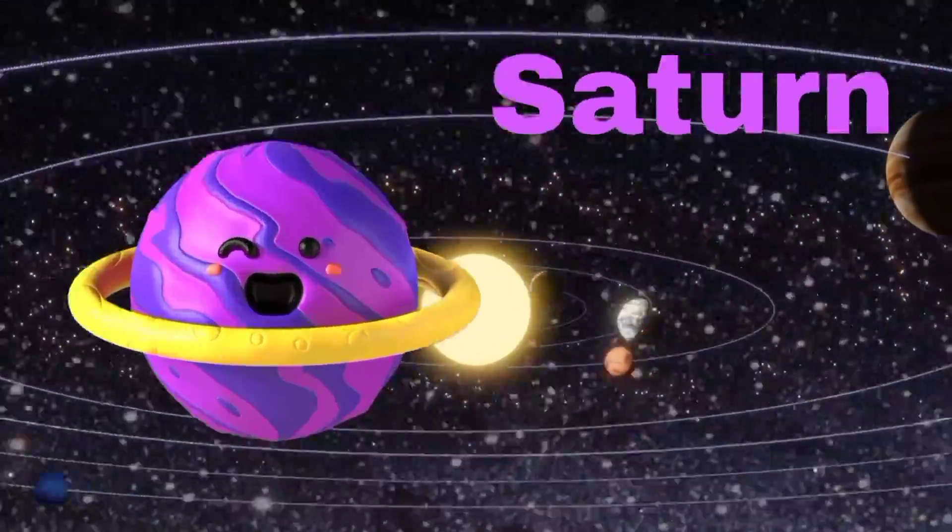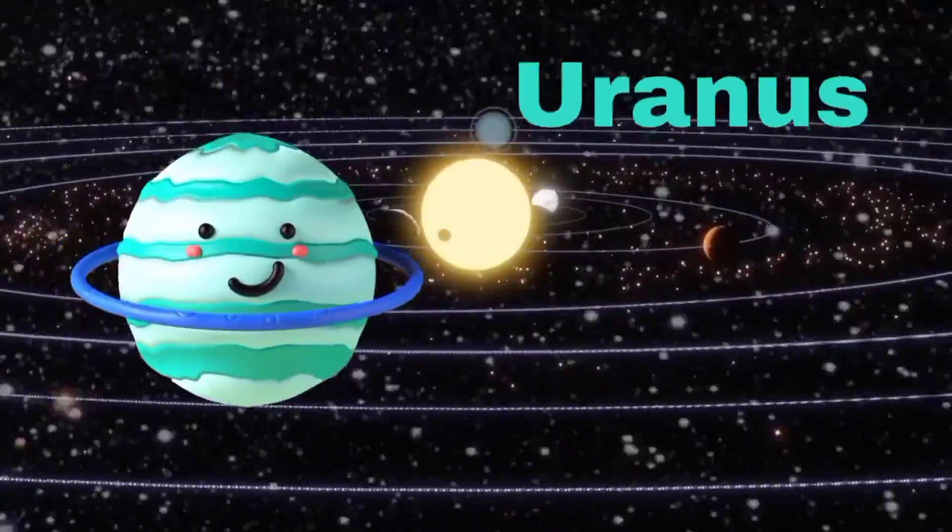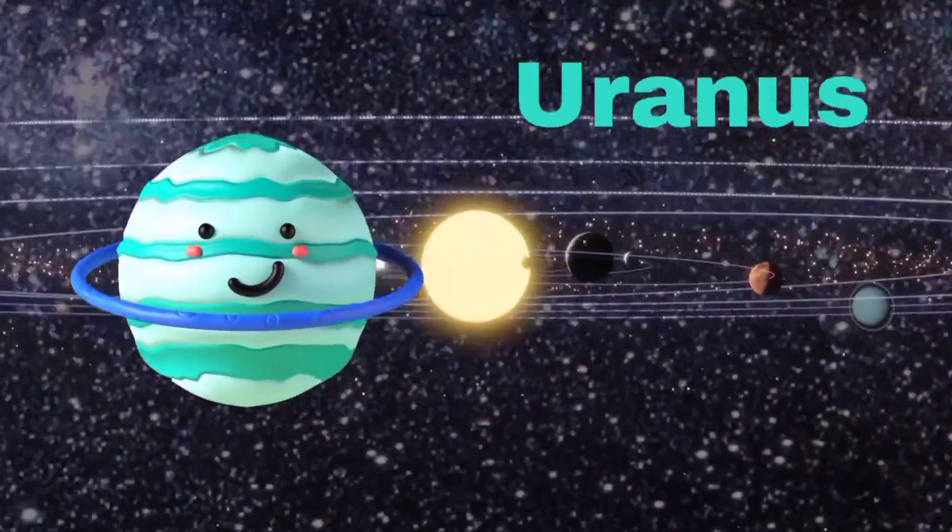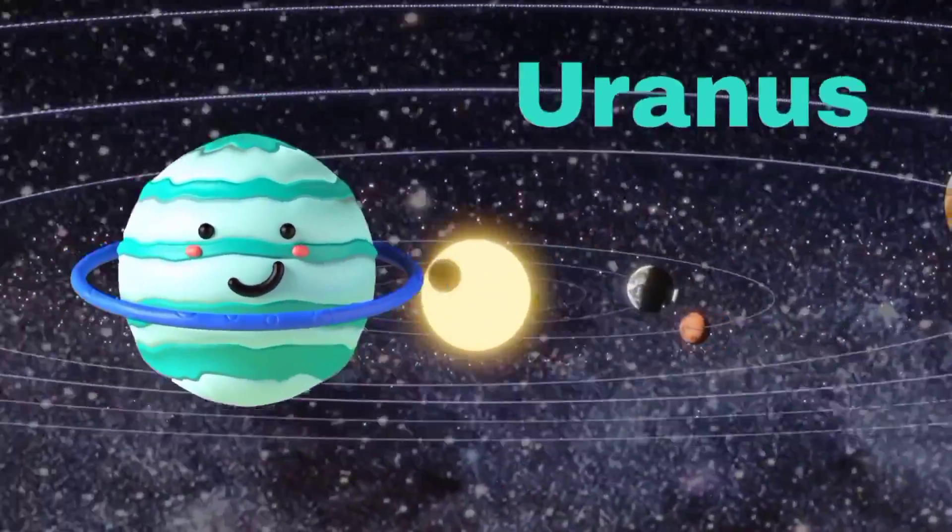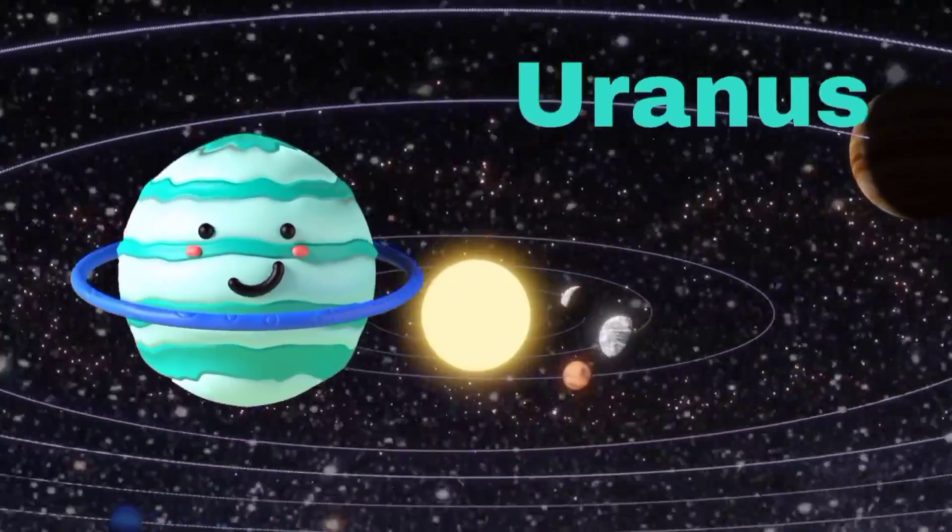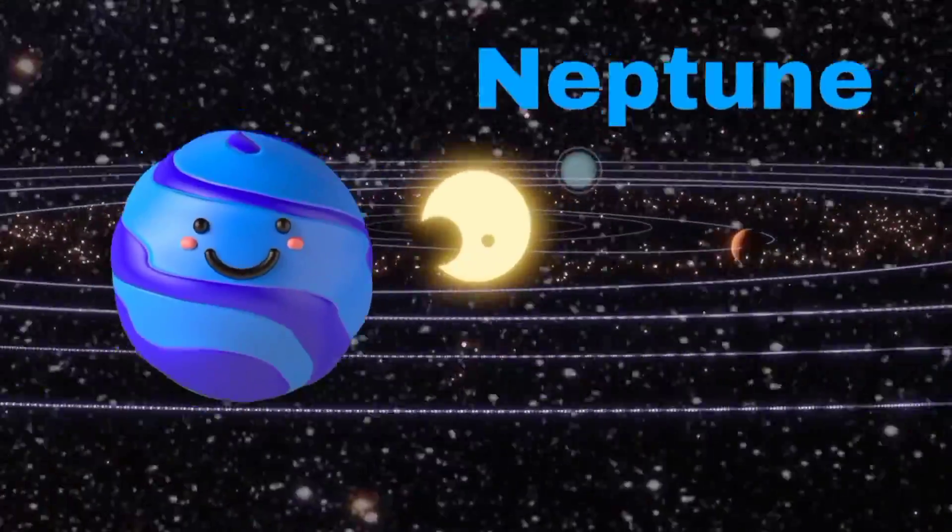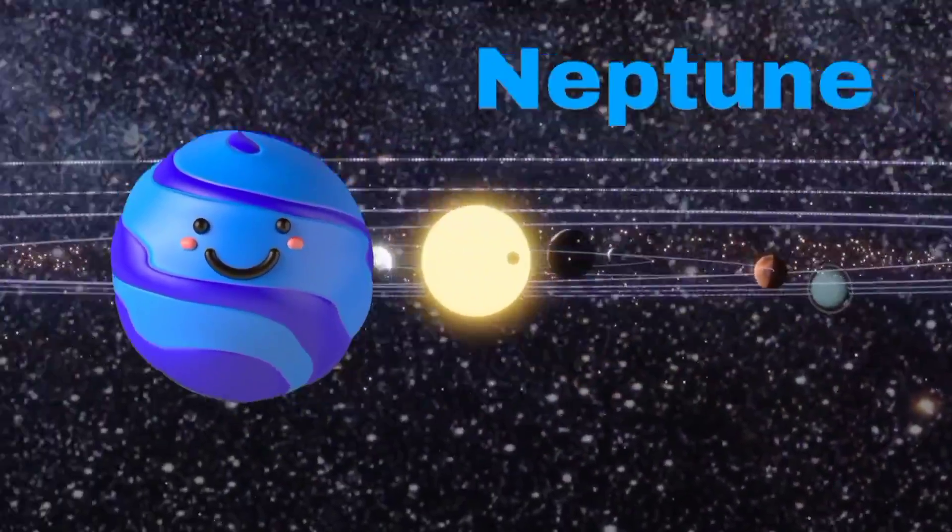I have 27 moons, I'm Uranus, Uranus. I'm made of gas, I'm Neptune, Neptune.